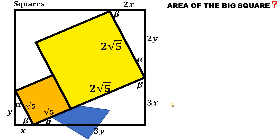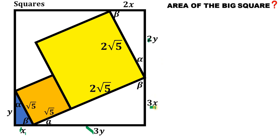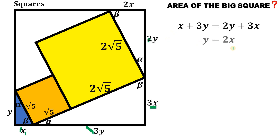Now, notice that we can represent the side of the big square in two different ways. The first one is x plus 3y, and the second one is 2y plus 3x. So we set these two expressions equal, because those are the side lengths of our big square. Combining like terms, we get that y equals 2 times x.